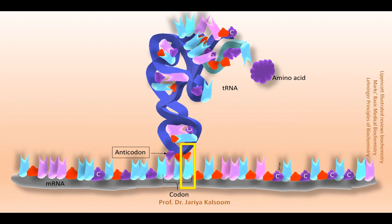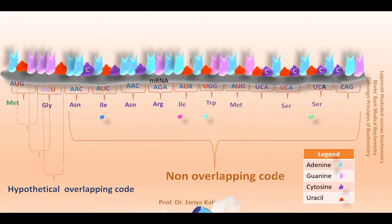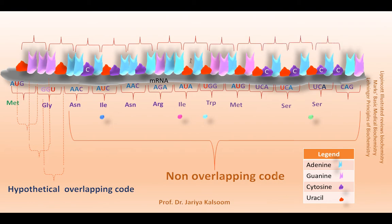The wobbling point is highlighted in yellow color, and this is the point where non-traditional base pairing occurs. The genetic code is also non-overlapping and comma-less, meaning the code is read from a fixed starting point as a continuous sequence of bases taken three at a time without any punctuation mark. If one base is removed, the whole reading frame will be shifted.